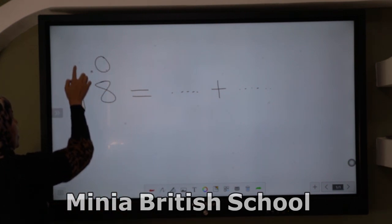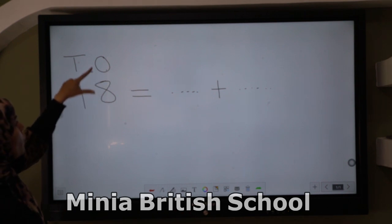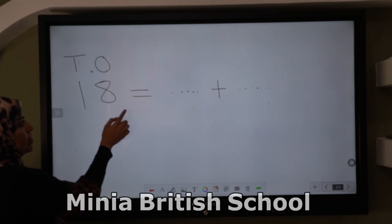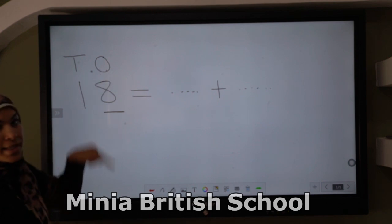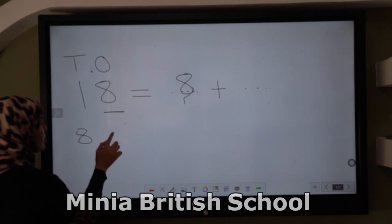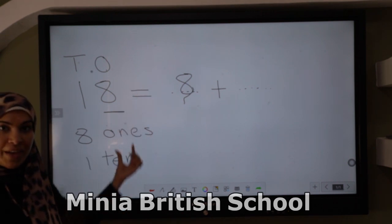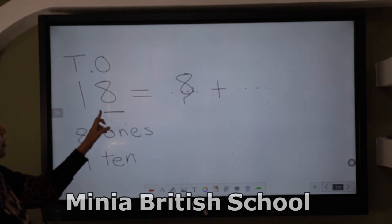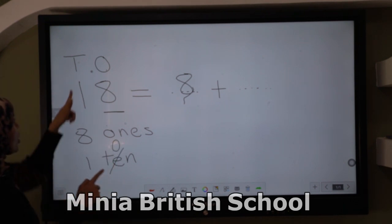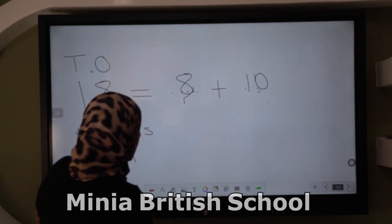For 15 or 18, you have two ways. The first way: write 10 plus 8. The second way: write O and T above the number and use the value. For ones — eight ones, replace ones by nothing, so the number stays as it is: eight ones equals eight. For tens — one ten, replace ten by zero, so one ten equals ten.